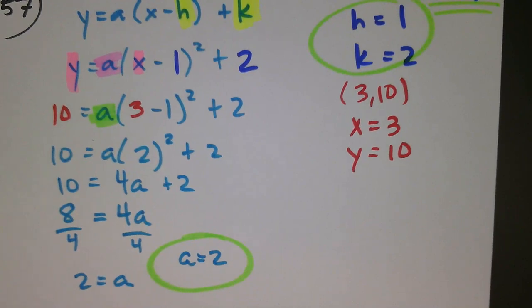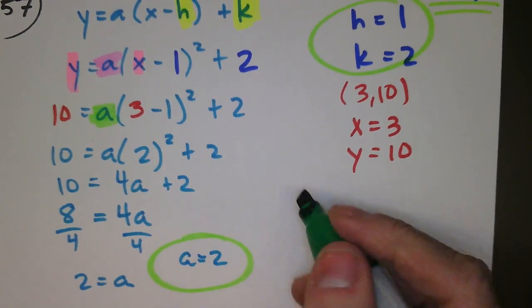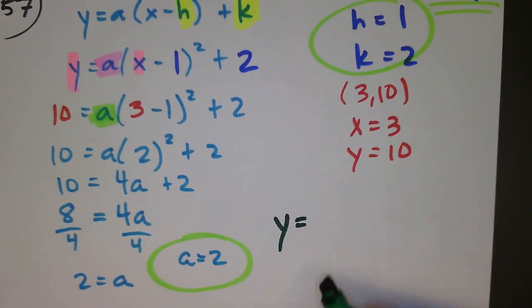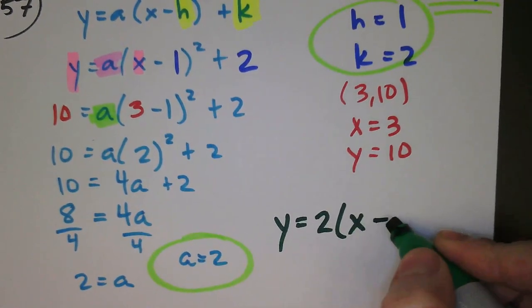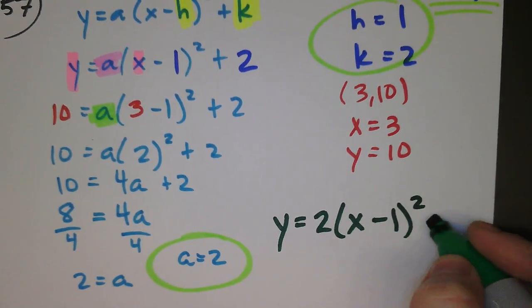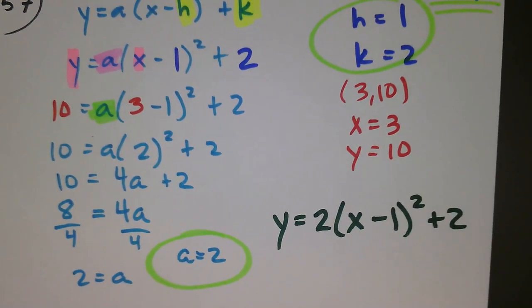I'm going to go ahead and put this whole thing together then. y is equal to 2, the a value, times x minus h, which is 1, quantity squared, plus 2. And that becomes my final answer.